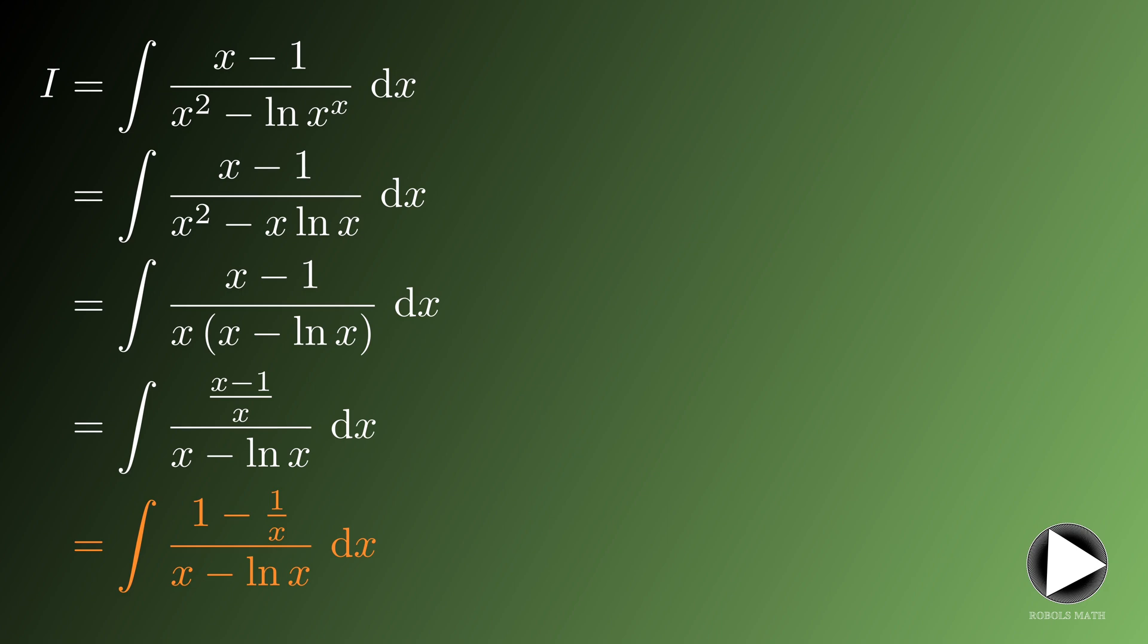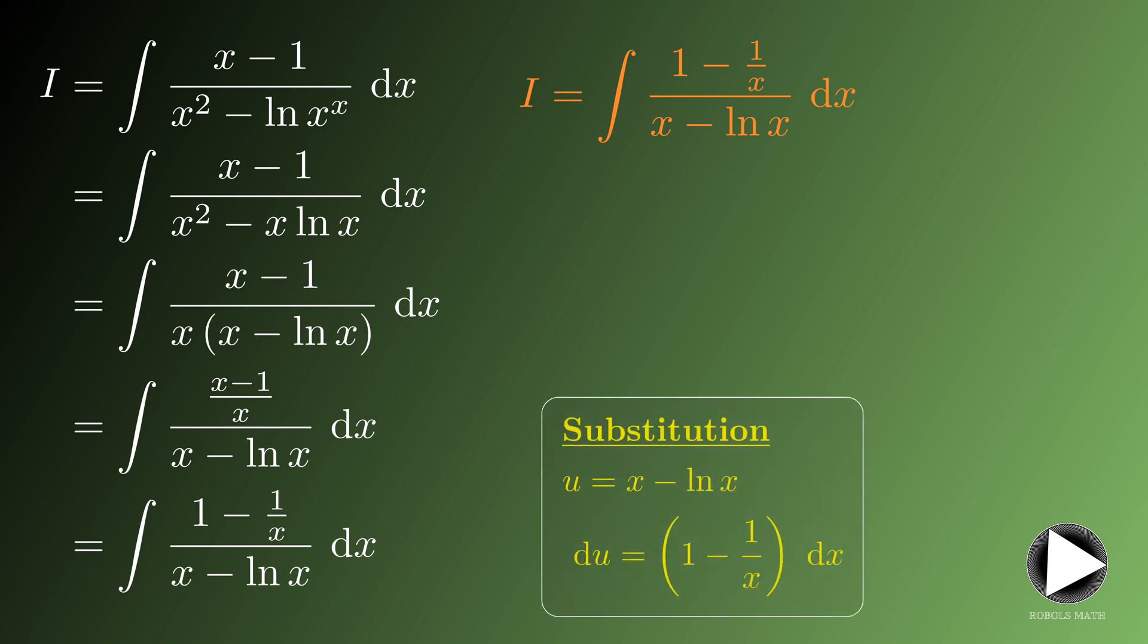Now at this point, the substitution should be clear. We would let u equals the denominator which is x minus ln x, which would give a derivative that is du equals the quantity of 1 minus 1 over x dx.